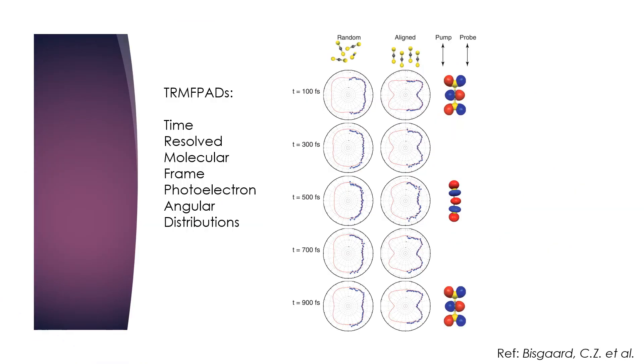If we make our pump probe measurements during this one picosecond window, where the molecules share an alignment, then we will be able to resolve much more information about the electron densities in the system. Here the data gathered is presented in 2D, as gathered on the microchannel plate detectors.